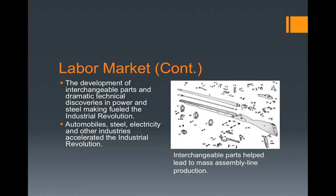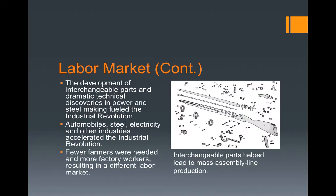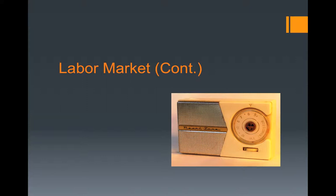Automobiles, steel, electricity, and other industries accelerated the Industrial Revolution. Fewer farmers were needed and more factory workers, resulting in a different labor market. With interchangeable parts, you were able to have mass assembly lines where each worker assembled or made a different part, which made production much faster and much more consistent.